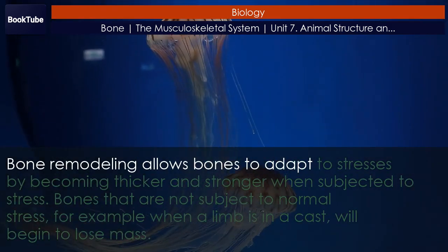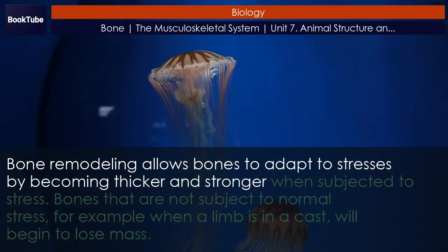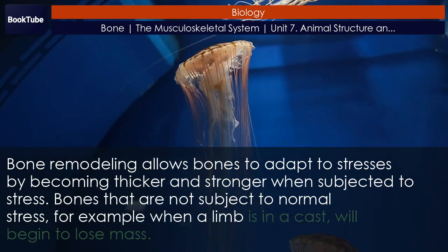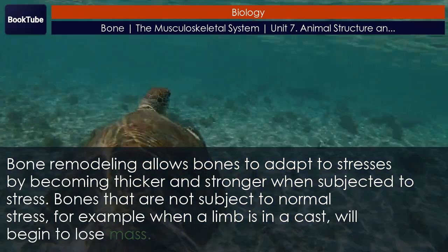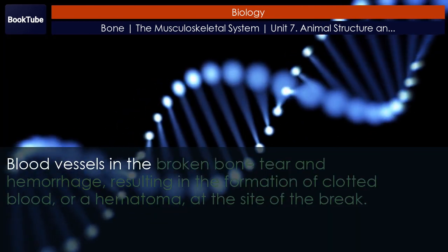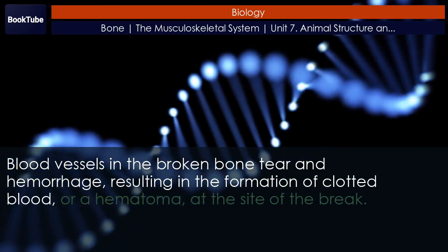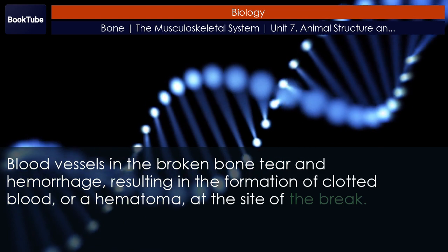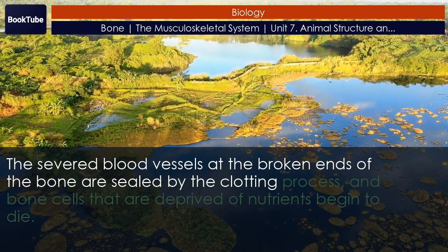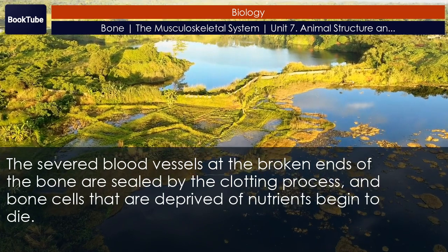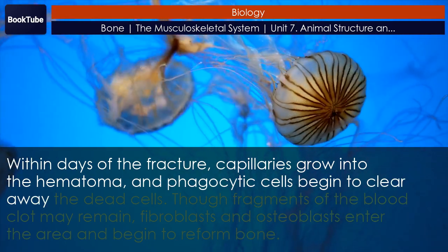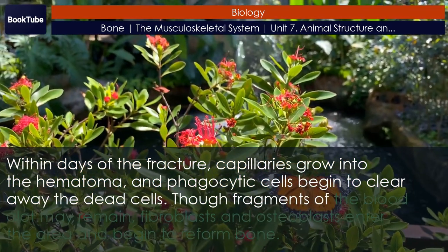Bone remodeling allows bones to adapt to stresses by becoming thicker and stronger when subjected to stress. Bones that are not subject to normal stress — for example when a limb is in a cast — will begin to lose mass. A fractured or broken bone undergoes repair through four stages. Blood vessels in the broken bone tear and hemorrhage, resulting in the formation of clotted blood, or a hematoma, at the site of the break. The severed blood vessels at the broken ends of the bone are sealed by the clotting process, and bone cells deprived of nutrients begin to die. Within days of the fracture, capillaries grow into the hematoma and phagocytic cells begin to clear away the dead cells, though fragments of the blood clot may remain.